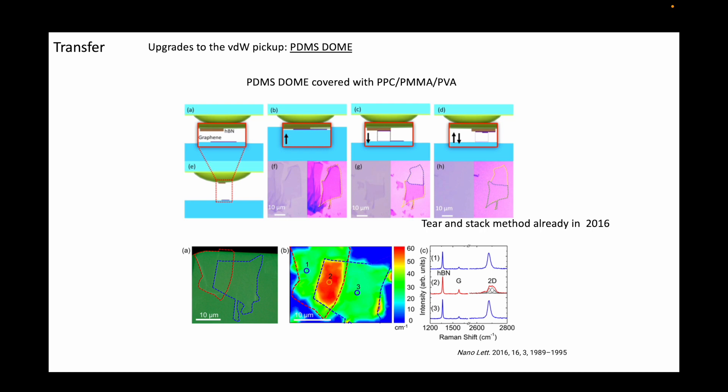If a block is used, then a large area of the substrate, which may have several other viable flakes, is also put in contact with a polymer layer, which may introduce dirt, residues or strain.